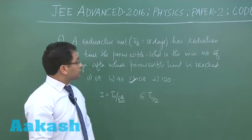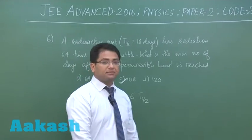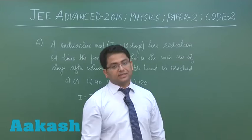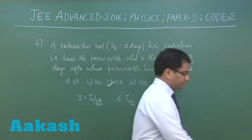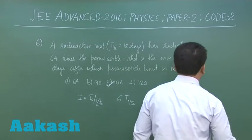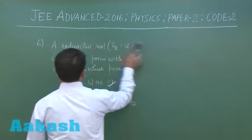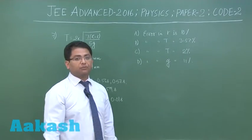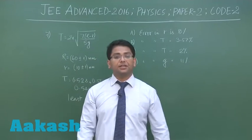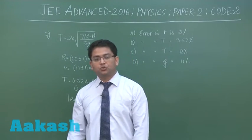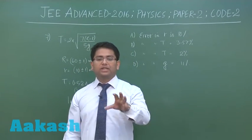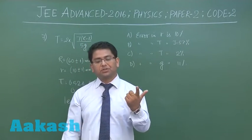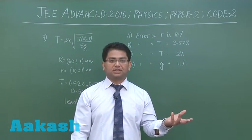With question six, we end section one and move to section two. Question number seven begins section two, where more than one option may be correct — it could be only one option or it could be multiple options.